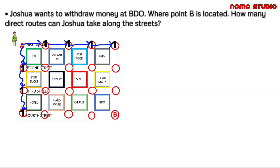Now, what if Joshua wanted to go through this intersection here? All we have to do is add the two adjacent routes. So one route plus one route gives us two. How about here — we have one route there and two routes here, so it gives us three. Next we have one route plus three routes, so this is four.